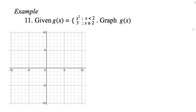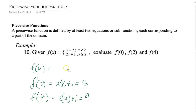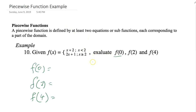Now let's talk about piecewise functions. A piecewise function is defined by two or more equations, each representing a part of the domain. For this example, f of x equals x plus 2 if x is less than 2, and 2x plus 1 if x is greater than or equal to 2. To evaluate f of 0: since 0 is less than 2, we use the first part, so 0 plus 2 equals 2.